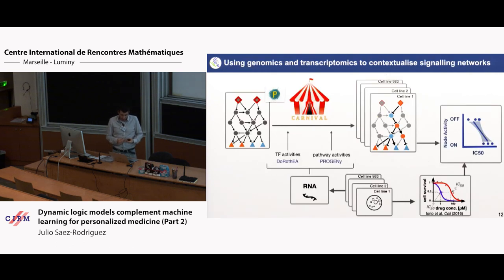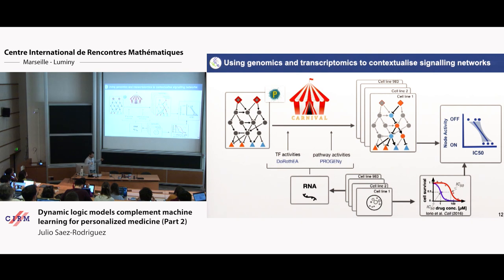Once we did that, we decided to use this to look at the drug response data. In CARNIVAL, you take a sign-directed graph. From gene expression, you estimate transcription factors and pathways. You generate models — in our case we had around 1,000 cell lines, so we make one network model for each. Then we can say: if my method estimates that this node is on, I would expect an association with the drug efficacy of a drug that blocks this node — if it's on, it's more likely sensitive to the drug.